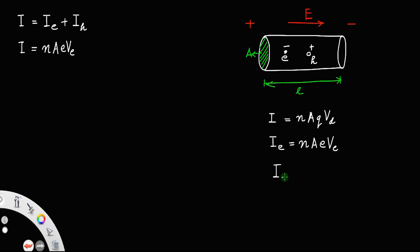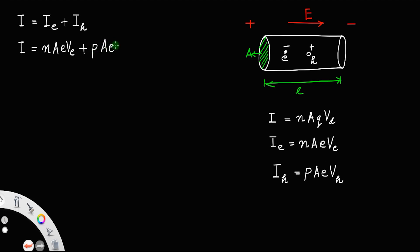Now the current due to holes, I_H, equals the number density of the holes. Let P be the number density of the holes, meaning the number of holes per unit volume. The cross-sectional area remains the same for both electrons and holes since they are in the same conductor of area A. The charge magnitude is also the same, e, and the drift velocity of the holes is V_H. So I_H equals P times A times e times V_H.